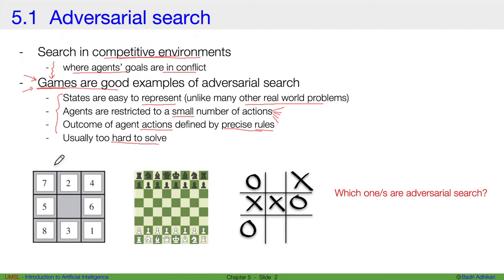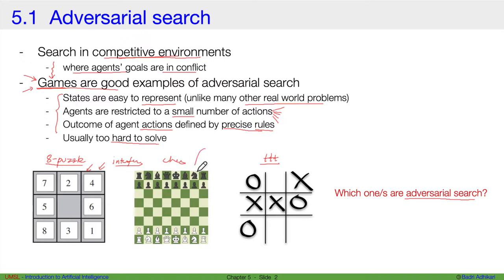Here are three games: the 8-puzzle game, chess, and tic-tac-toe. Which of these are adversarial? When playing the 8-puzzle game, nobody is disturbing or interfering with our play. Whereas in chess, player P1 plays and the other player P2 interferes with your moves. In tic-tac-toe, if you are playing as player 1, the other player P2 interferes with what you play.